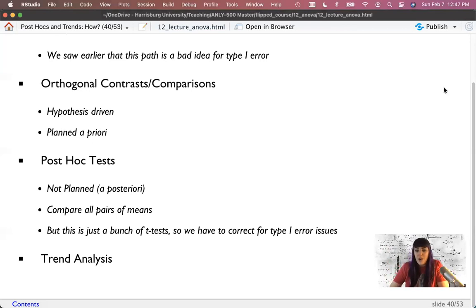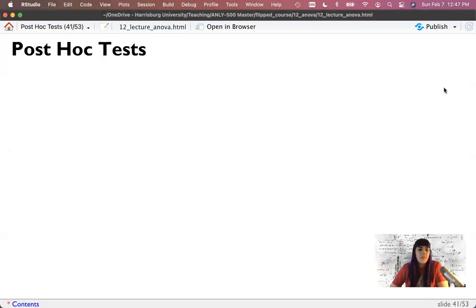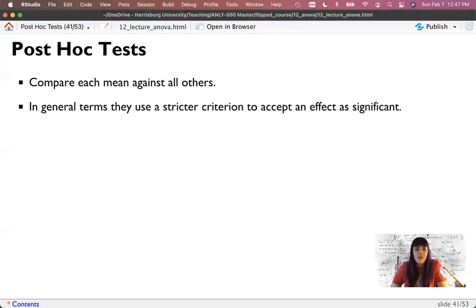So trend analysis only makes sense when your IV has some sort of continuity implied. So in our case, it's no dose, a low dose, and a high dose. So let's start with a more popular one, the post hoc test, where we're going to compare every mean to every other mean. In general, we need to use some sort of stricter alpha to accept that that effect is significant to control for a type one error.